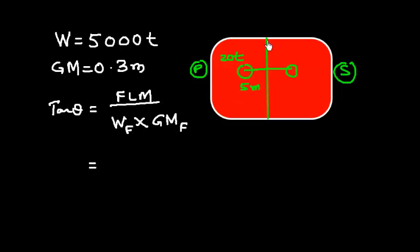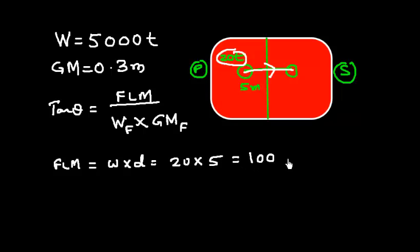Let's talk about final list moment. We assume that initially the vessel is upright and we shift this 20-ton weight 5 meters in transverse direction. So this final list moment is going to be W into D. And W is 20 and D is 5, so we get 100 ton-meters, port or starboard.